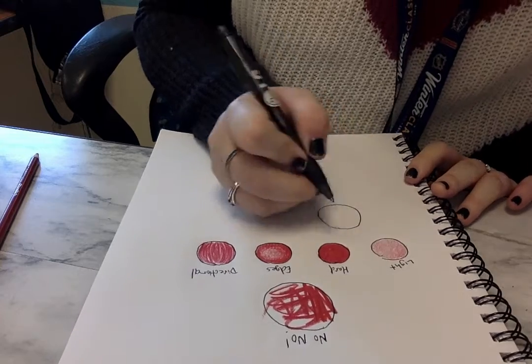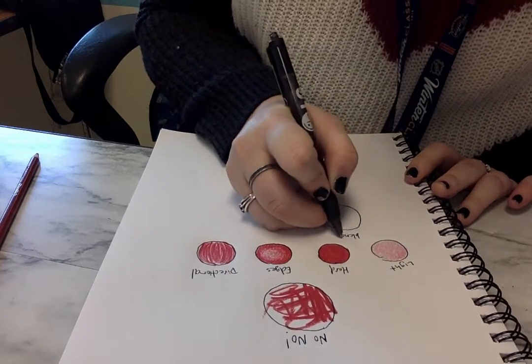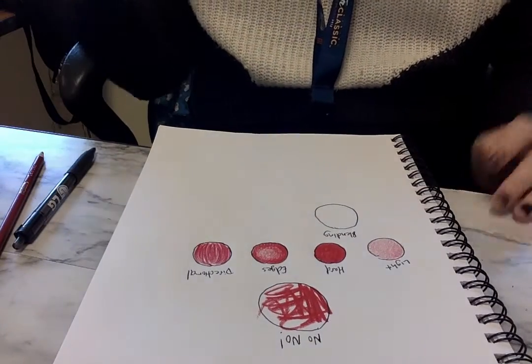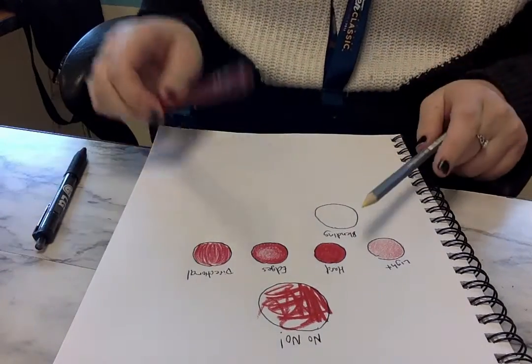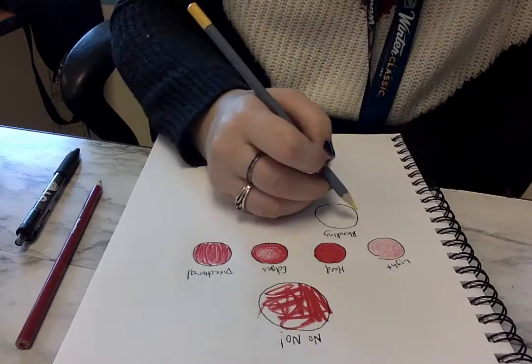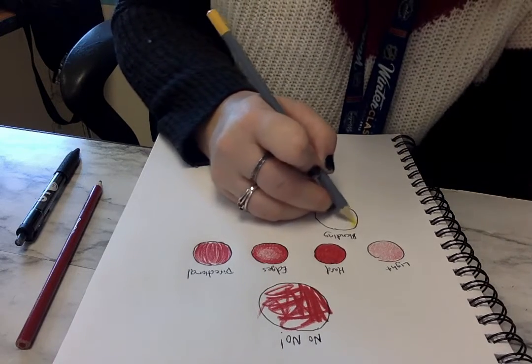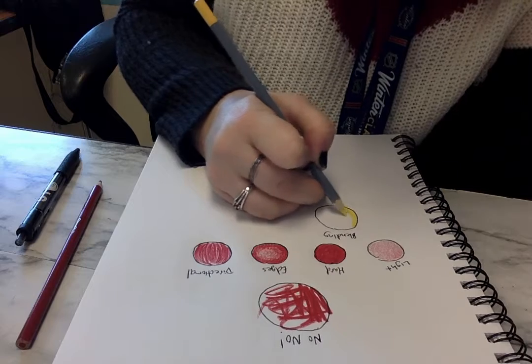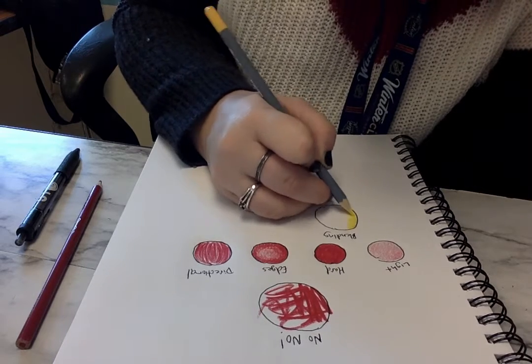The next one is kind of fun. This one is going to be blending. This would be taking two colors, so you want to have a light color pencil and a dark colored pencil. I'm going to go in with yellow and I'm going to go really dark, lots of pressure on one side of my circle.